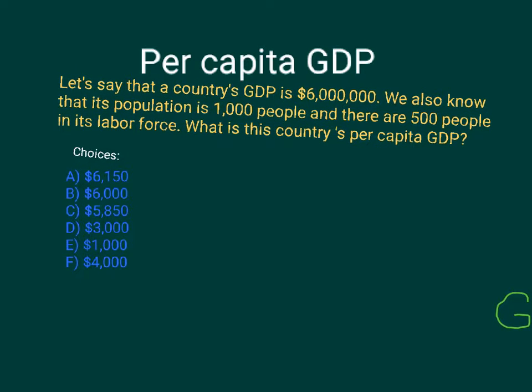Bonjour everyone, we're going to talk about per capita GDP. There's a multiple choice question here to get us some practice. It says: if a country's GDP is six million, the population is a thousand people, and of those thousand people 500 are in the labor force, what is this country's per capita GDP?